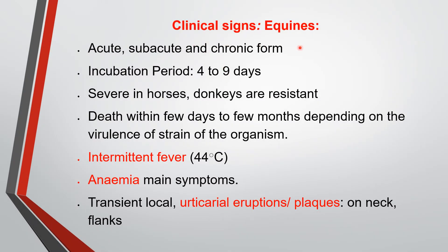First we see clinical signs in equines. Equines are highly susceptible and a large number of cases are seen in equines. In equines there are many forms — acute, subacute, and chronic. The incubation period is 4 to 9 days. The symptoms in horses are severe, while donkeys are generally resistant. In acute cases, there is death within a few days; in chronic cases, death occurs after a few months depending on the virulence or strain of the organism.